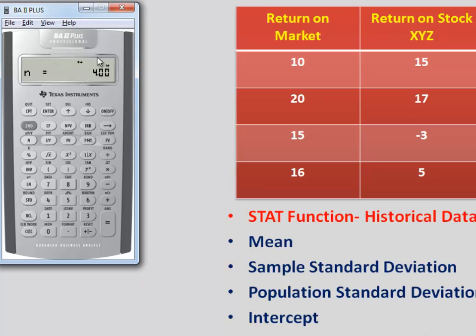Press downward arrow the first thing that you see is n is equal to 4 that means we have entered four separate variables we have a X bar here X bar in this case is given to be 15.25 that means the mean of return on market is 15.25